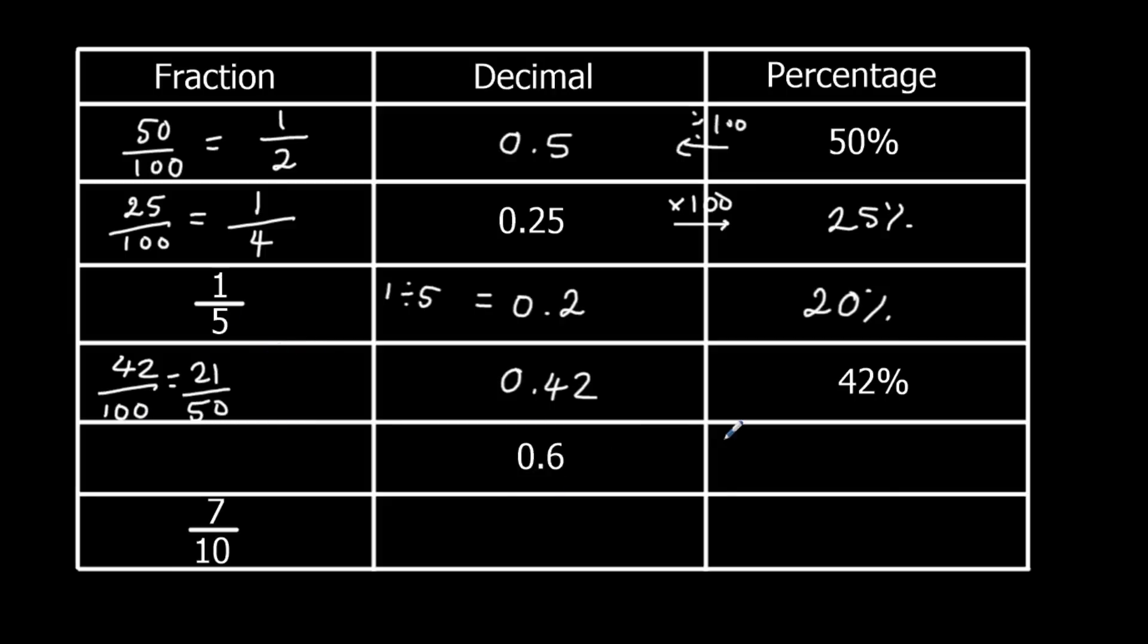0.6. We'll change it to a percentage by times by 100, 60%. And 60 over 100, 20 times table, so 3 fifths.